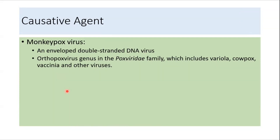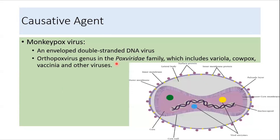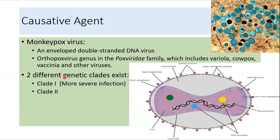Talking about the causative agent, monkeypox virus is an enveloped double-stranded DNA virus in the Poxviridae family, or the Orthopoxvirus genus. This family includes variola, cowpox, vaccinia, and other viruses. The virus has two genetic clades — clade 1 and clade 2 — and clade 1 causes more severe infection.